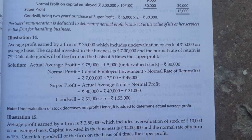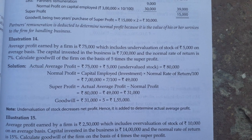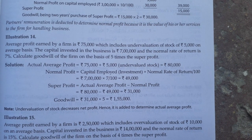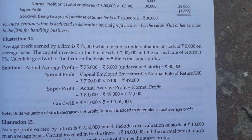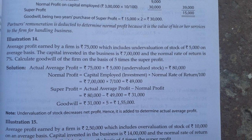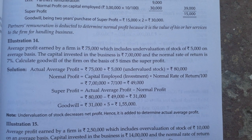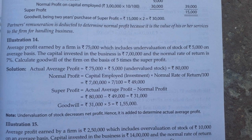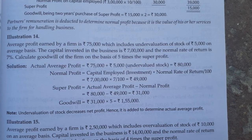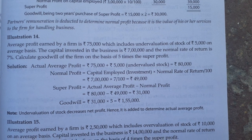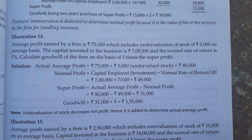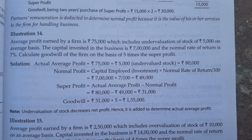Our question says that the average profit earned by a firm is 75,000, which includes undervaluation of stock of Rs. 5,000 on an average basis. The capital invested in the business is 7,00,000 and the normal rate of return is 7%. Goodwill of the firm is to be calculated on the basis of 5 times the super profit. So we have to calculate goodwill as per the super profit method.